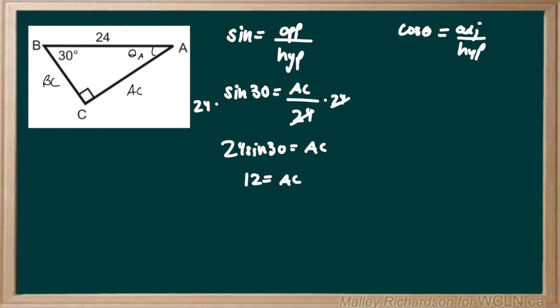So now that we've solved for our side length of AC, we can solve for BC. We can see that BC is adjacent to 30 degrees, so that's where we can use our cosine theta.